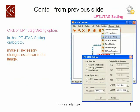The next setting is the LPT JTAG setting. When you click on LPT JTAG Setting, the dialog box appears as shown in the slide. These are all the default settings to be made; then click OK.